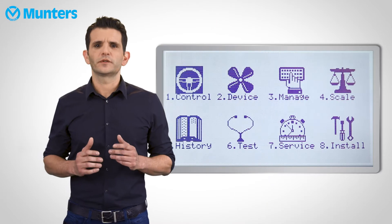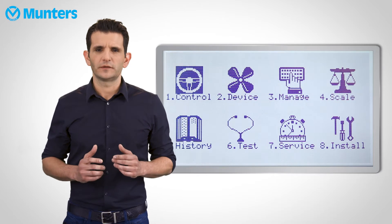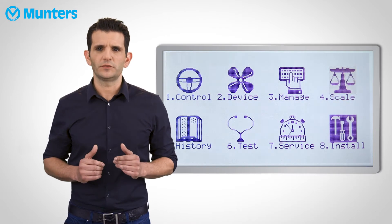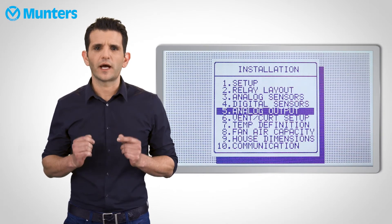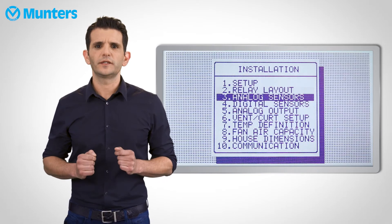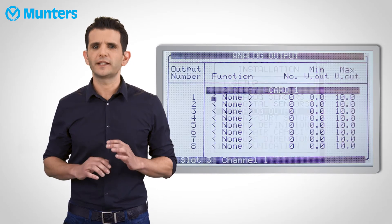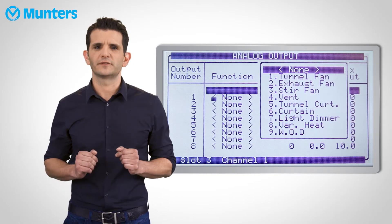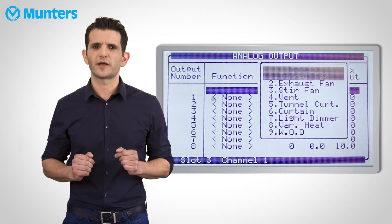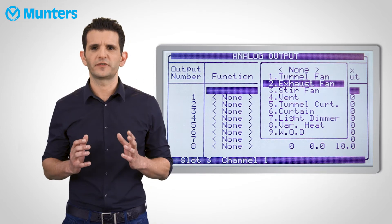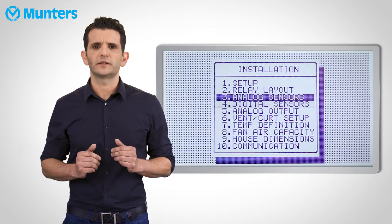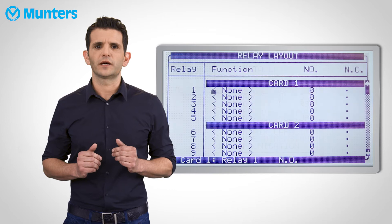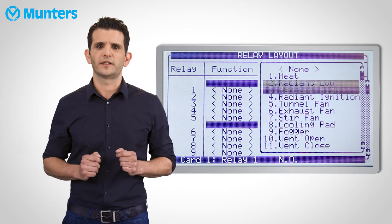So let's install some fans. Press Menu on the main screen, navigate to Installation menu, and then select Analog Output. In this menu, you can define any device as variable speed device. For example, Exhaust Fan 1. Now let's navigate back to the Relay Layout and try to define an exhaust fan.